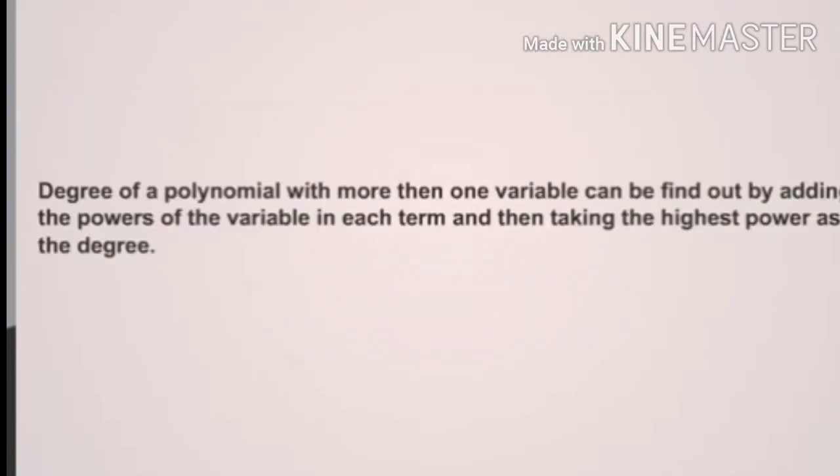The degree of a polynomial with more than one variable can be found by adding the powers of the variables in each term, and then taking the highest sum as the degree.